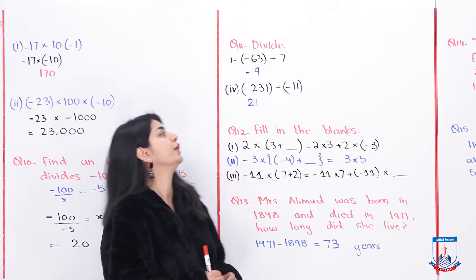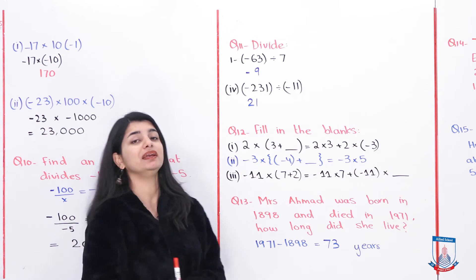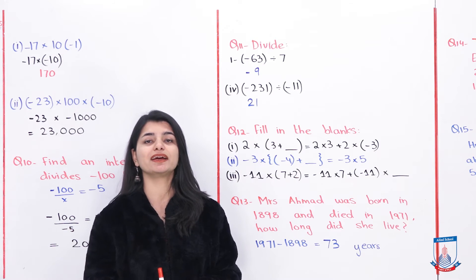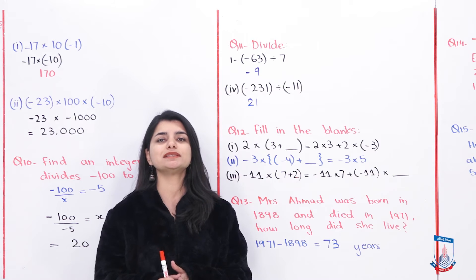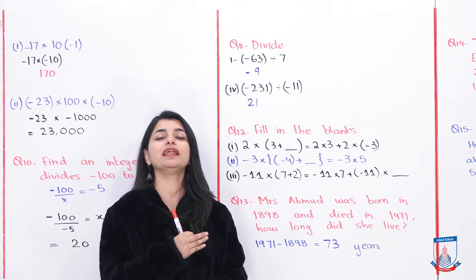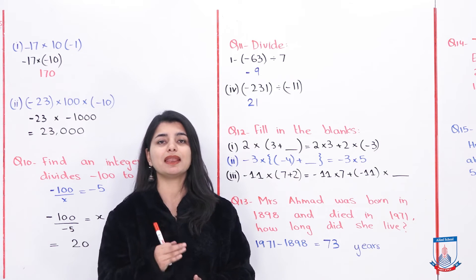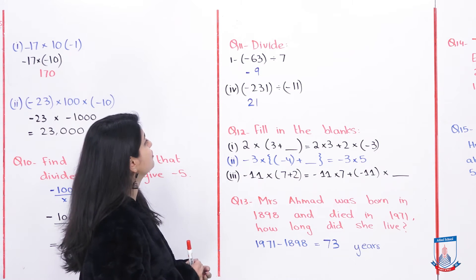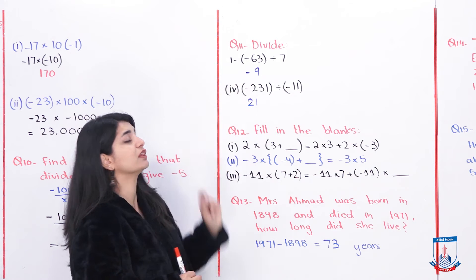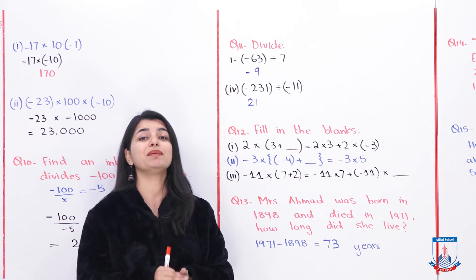Now let's look at question number 11: Divide negative 63 by 7. First, divide 63 by 7 using a table — write 63 inside, 7 outside. 7 nines are 63, so the answer is 9. Now determine the sign: negative 63 has a negative sign, and 7 has no sign, which means it is positive.